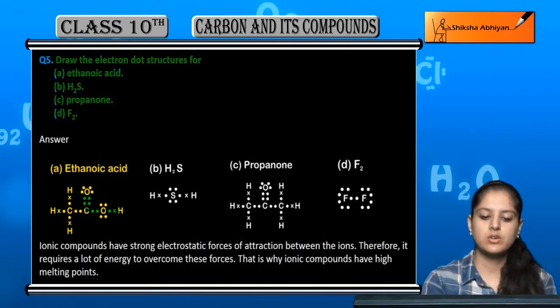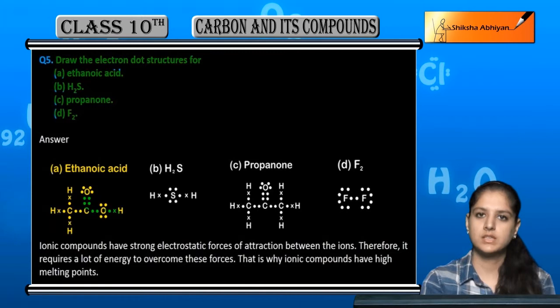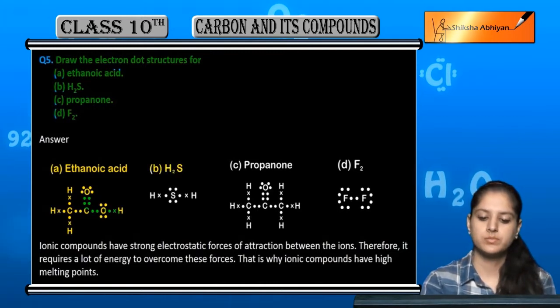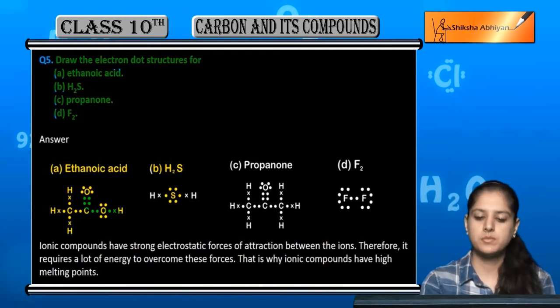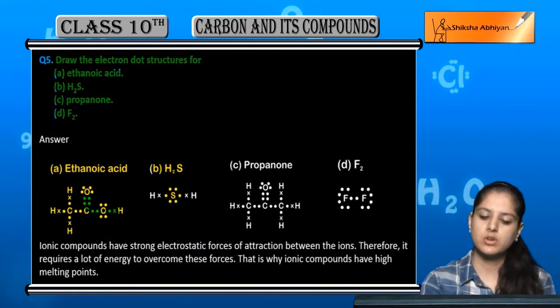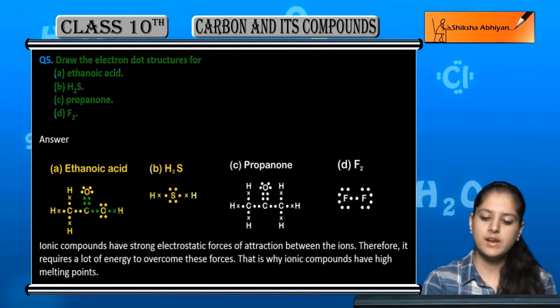This is the electron dot structure of ethanoic acid. Then H2S. H2S means sulfur is the main atom, which has 6 electrons, and hydrogen has 1 electron.